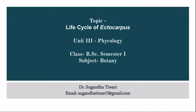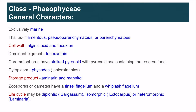The topic is the life cycle of Ectocarpus from Unit 3 Phycology, for BSc Semester 1 Botany students. Ectocarpus belongs to class Phaeophyceae, commonly known as brown algae.